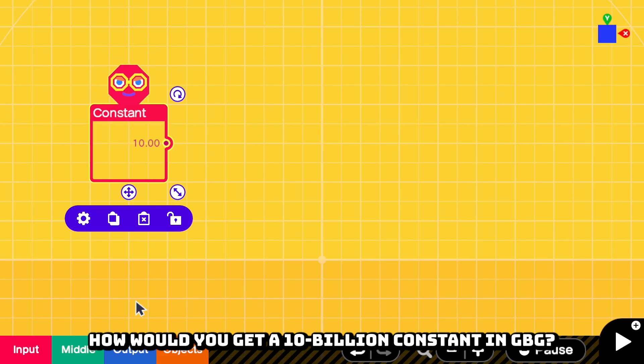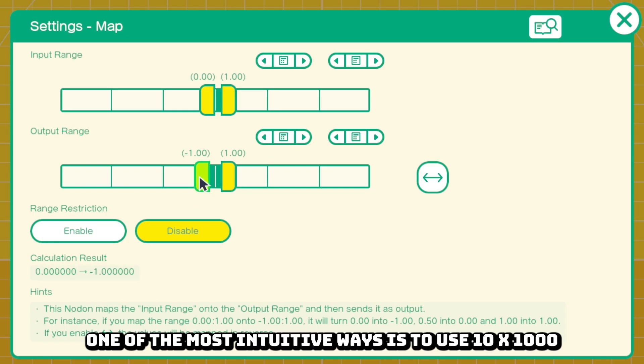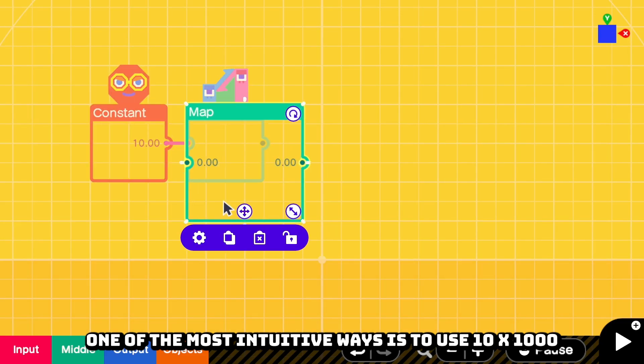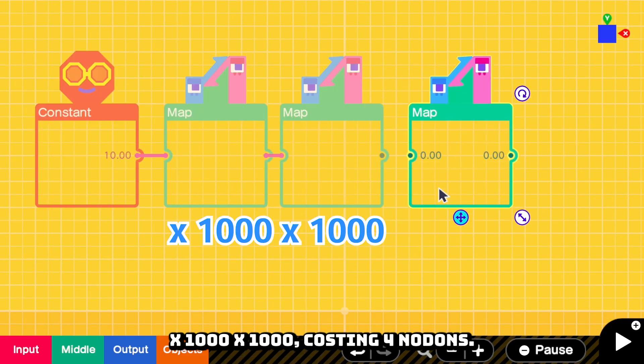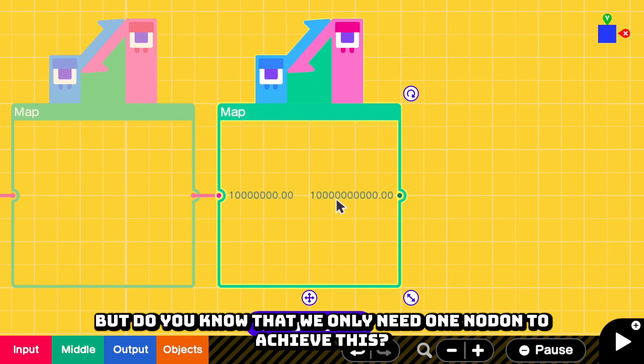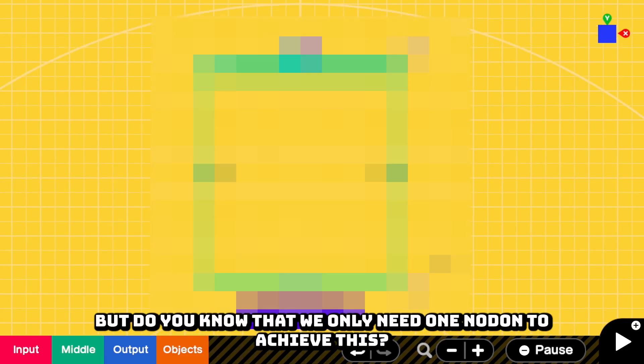How would you get a 10 billion constant in GPC? One of the most intuitive ways is to use 10 times 1000 times 1000 times 1000, costing 4 nodons. But do you know that we only need one neuron to achieve this?